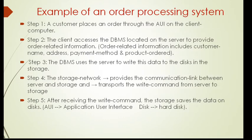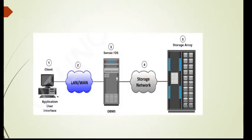Let us take one example of an online order processing system. In the figure, we have a client machine — the user interface through which the user is interacting — and the host or compute, connected using either LAN or WAN. The host is connected to a storage array through the storage network. There are five steps involved. In the first step, a customer places an order through a client machine connected over a LAN or WAN to the host that is running an order processing application.